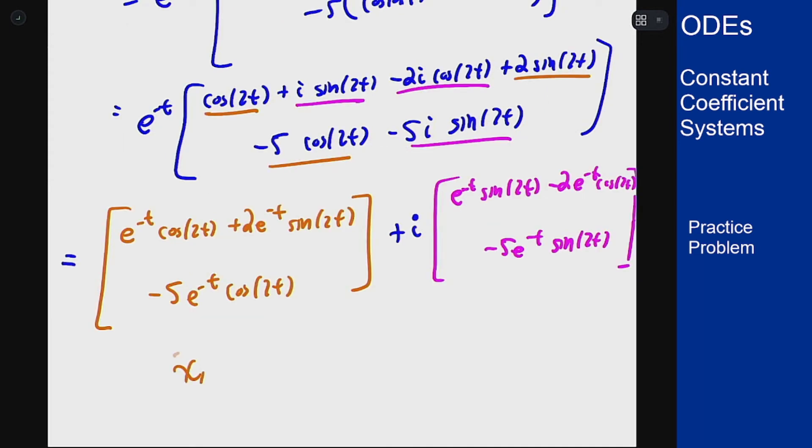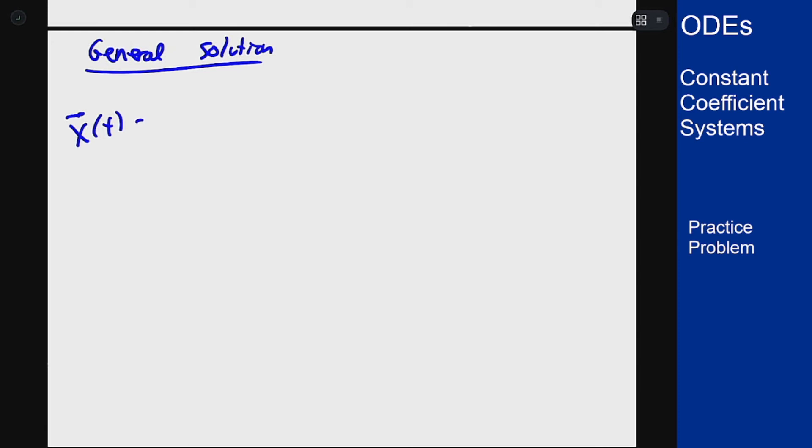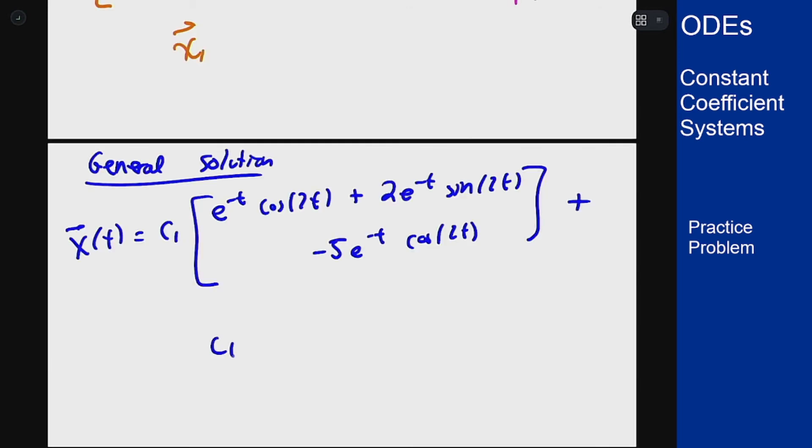And then this is our x1 first solution, this is our x2 second solution, we can then use to write out the general solution which will be c1 times that first solution and then plus c2 times the second one.